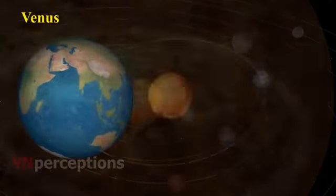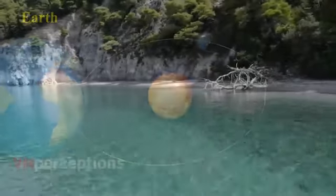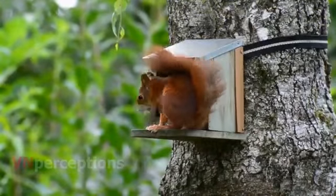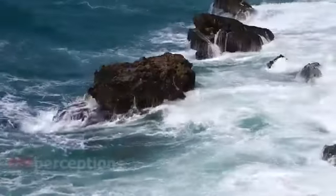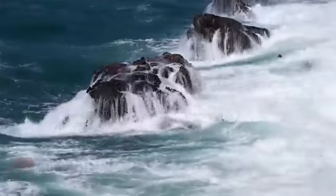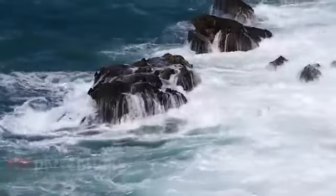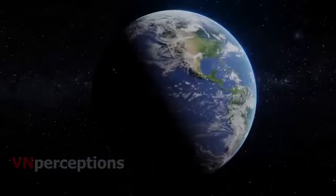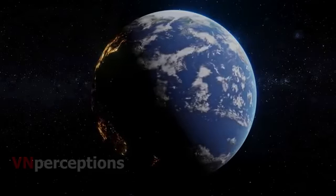Then comes our mother planet, that is Earth. It is the only planet in the solar system on which life is known to exist. Some special environmental conditions are responsible for the existence and continuation of life on Earth. These include the right distance from the sun so that it has the right temperature range, the presence of water, suitable atmosphere, and a blanket of ozone. From space, the Earth appears blue and green due to the reflection of light from water and land masses on its surface.